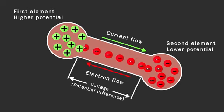For example, the first element has more positive charges so it has a higher potential. On the other hand, the second element has charges that are more negative so it has lower potential. The difference between two points is called potential difference.